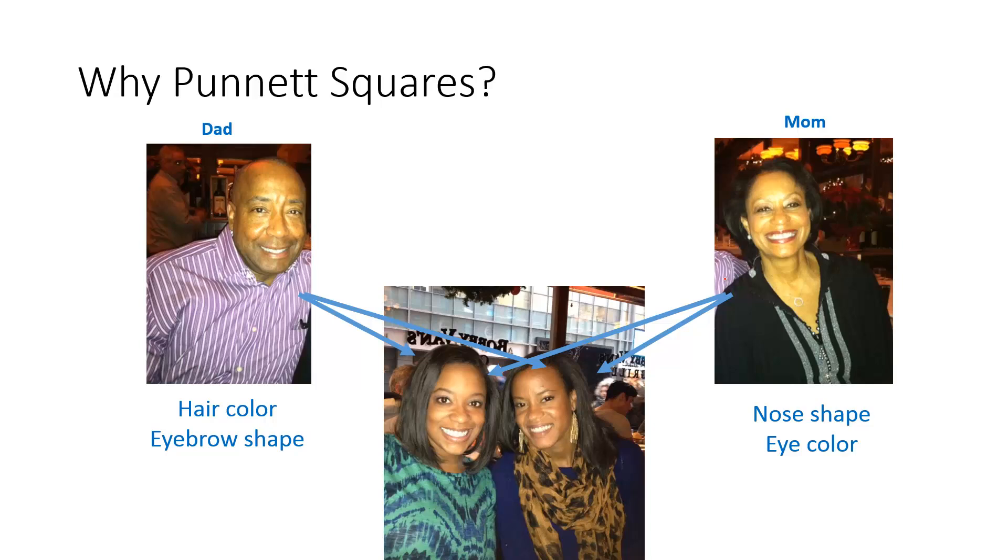But why is it so important? This is my mom and my dad here and my sister and I. You can clearly see that some of the traits or characteristics that my mom and dad have have been passed on to us. Even before my parents had me, if they used a Punnett Square, they would have been able to tell what my nose shape would be, what my eyebrow shape would be, even what my eye color and hair color was before they even had me.